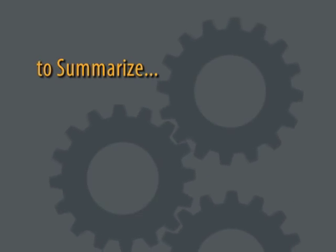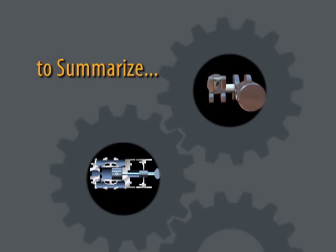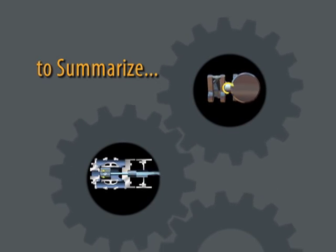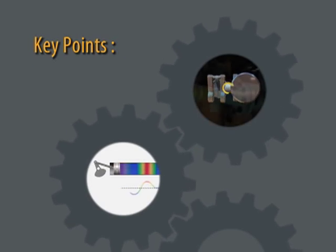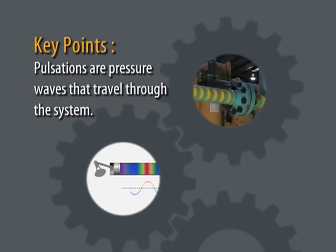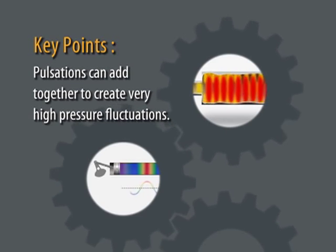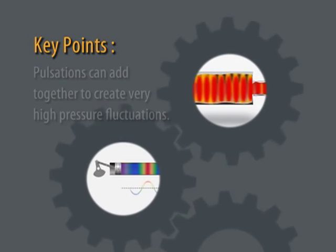Let's summarize this module. There are many forces generated by a reciprocating compressor package. This module describes how pressure pulsations are created during each cycle of a piston. Key points are, pulsations are pressure waves that travel through the system. At resonant conditions, pulsations are added together to create very high pressure fluctuations.